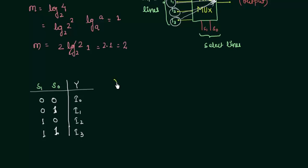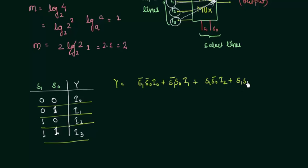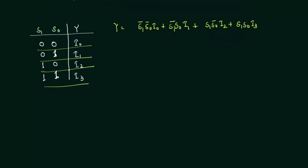So what is the value of Y? Let's find out. For this first case I am having S1 complement S0 complement I0. For this second case I am having S1 complement S0 I1. For this case S1 S0 complement I2 and for the last case I am having S1 S0 I3.